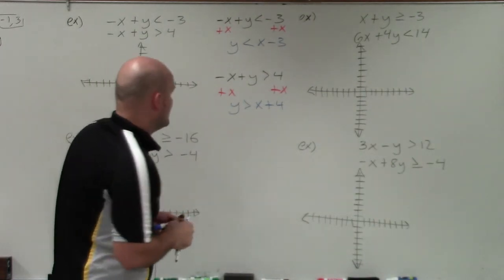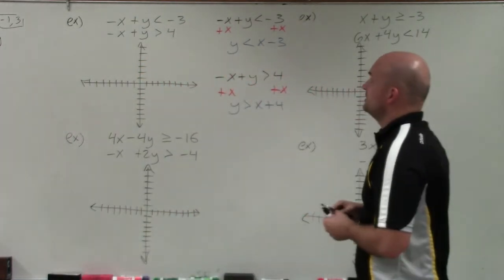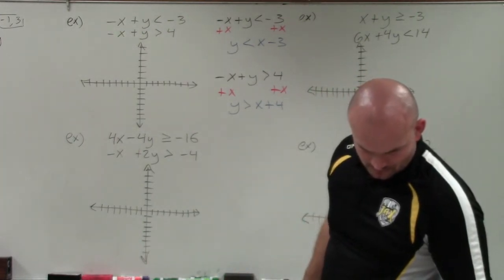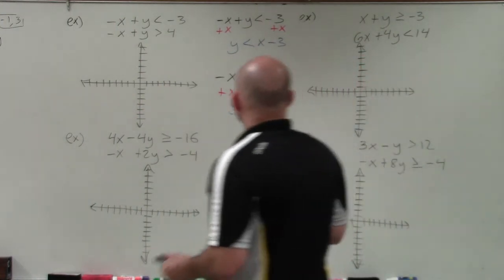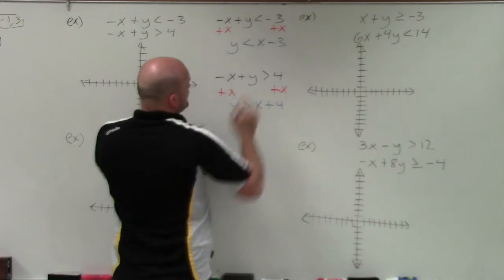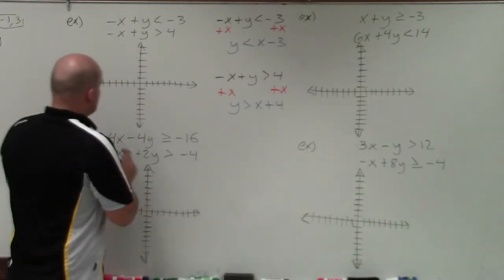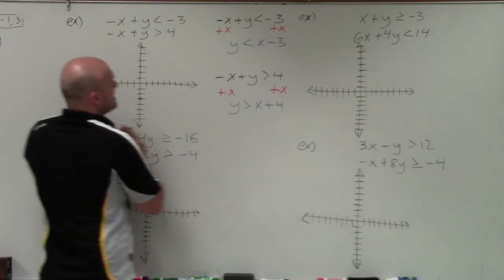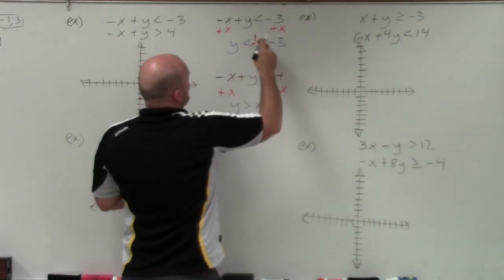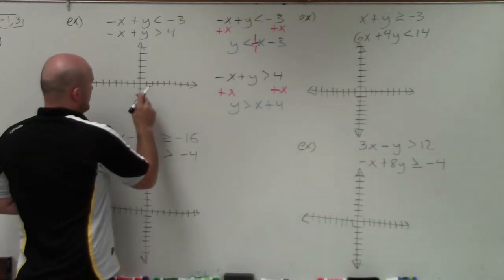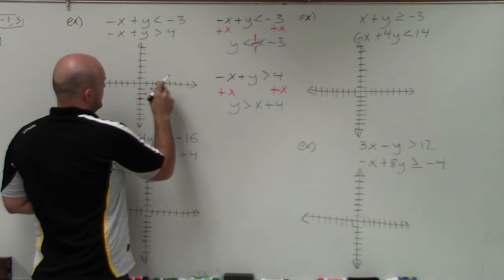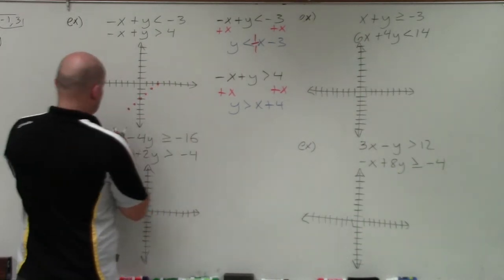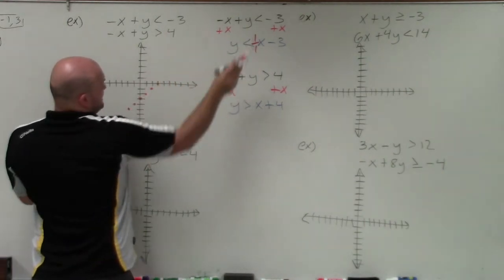Now we're going to graph both equations separately. For y is less than x minus 3, the constant is the y-intercept, so I go down to negative 3. My slope is 1 over 1, so I go up 1, over 1 repeatedly, or down 1, over 1 in the other direction. That is a dashed line.